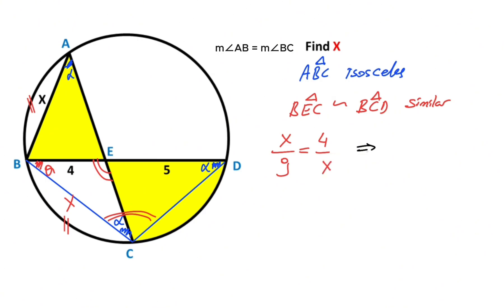Therefore, after the cross multiplication, x squared equals 36. So x is going to be 6 units.